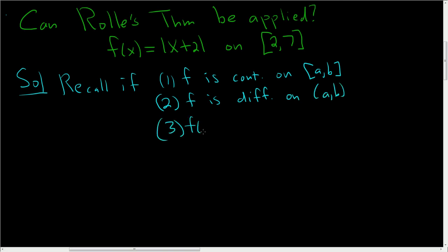f(a) = f(b). If all three conditions hold, then there exists a number c in the open interval (a,b) such that f'(c) = 0. Really cool theorem.